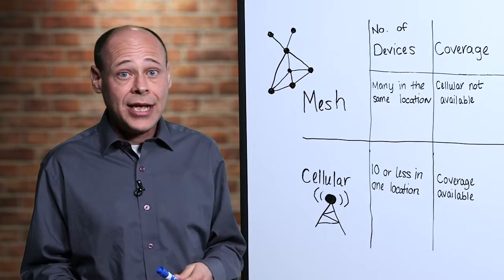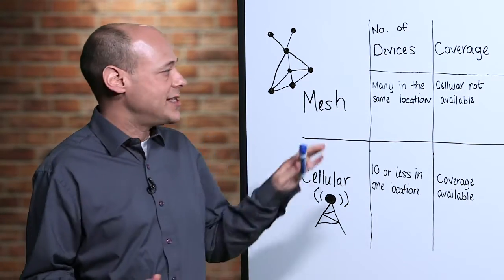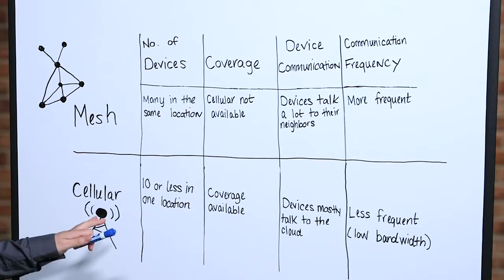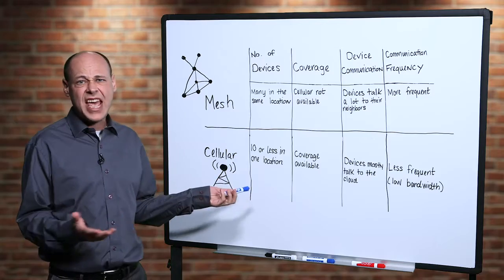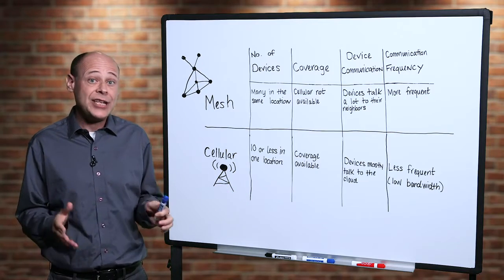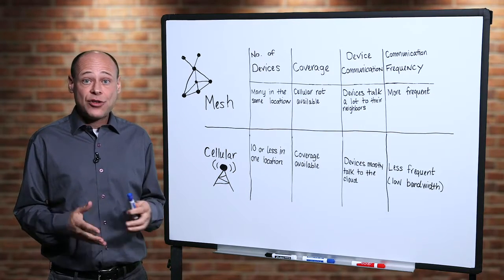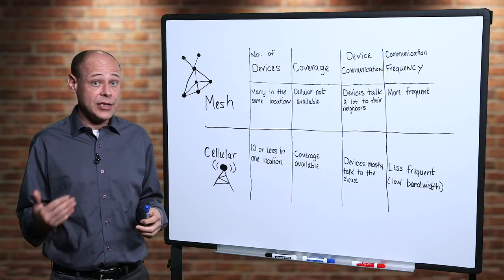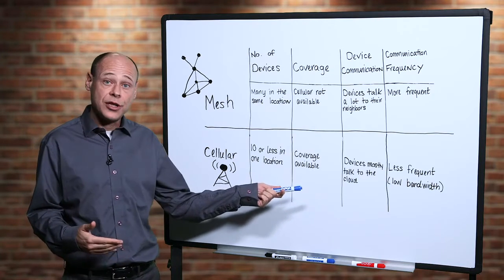Automated joining and self-healing help keep the street light network stable. Cellular networks are a good choice when there are relatively few devices per location, say five or ten on each local site. It's great when devices are mostly talking to the cloud and have little need to talk to each other.